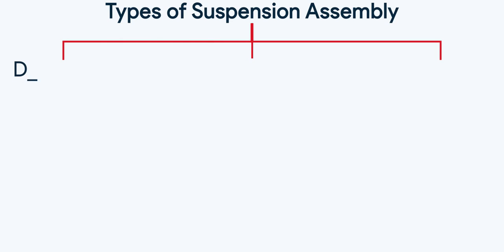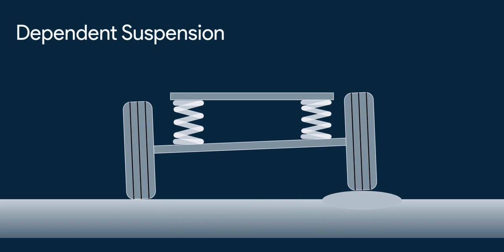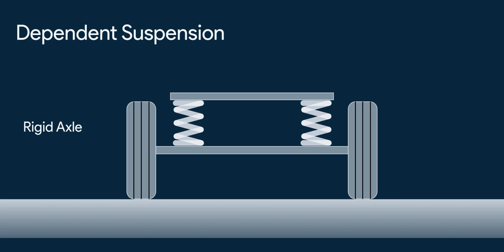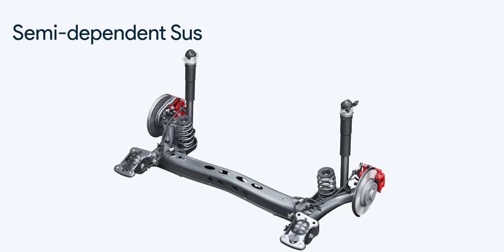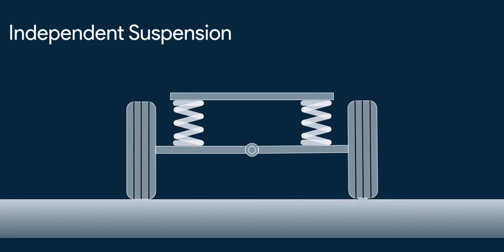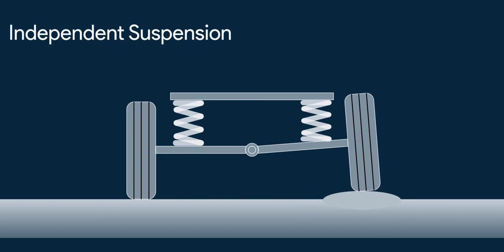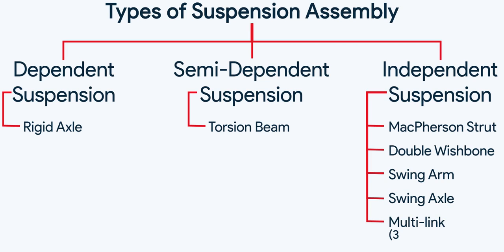There are three types of suspension assemblies: dependent, semi-dependent, and independent. In dependent suspension, the effect of one wheel affects the position of the other paired wheel — there is rigid axle suspension with either coil spring or leaf spring. The second is semi-independent suspension, the only type worth knowing being torsion beam suspension. Third is independent suspension, in which the position of one wheel doesn't affect the others. Its main types are McPherson strut, double wishbone, swing arm, swing axle, and multi-link suspension with 3, 4, or 5 links.